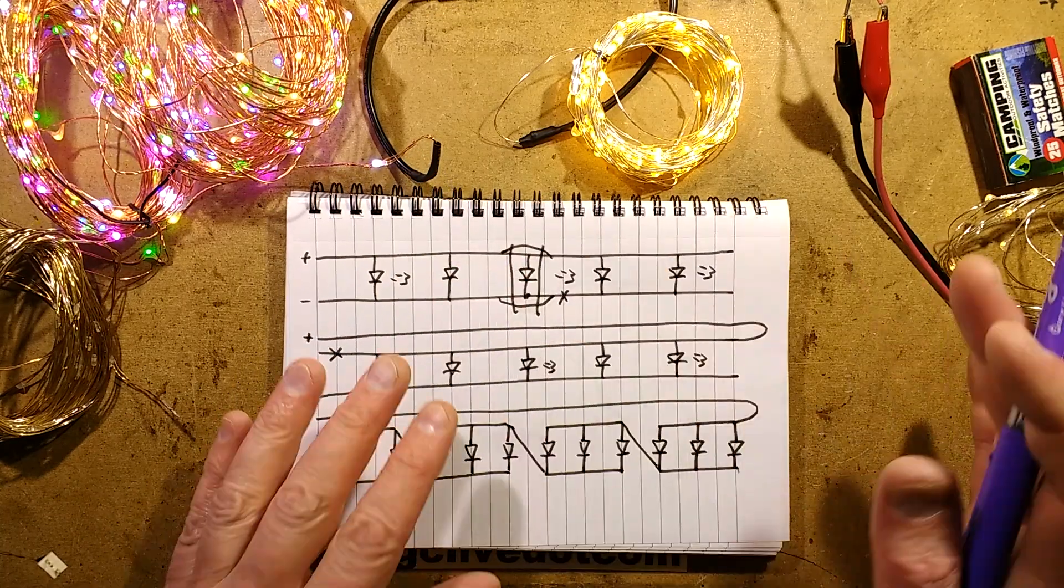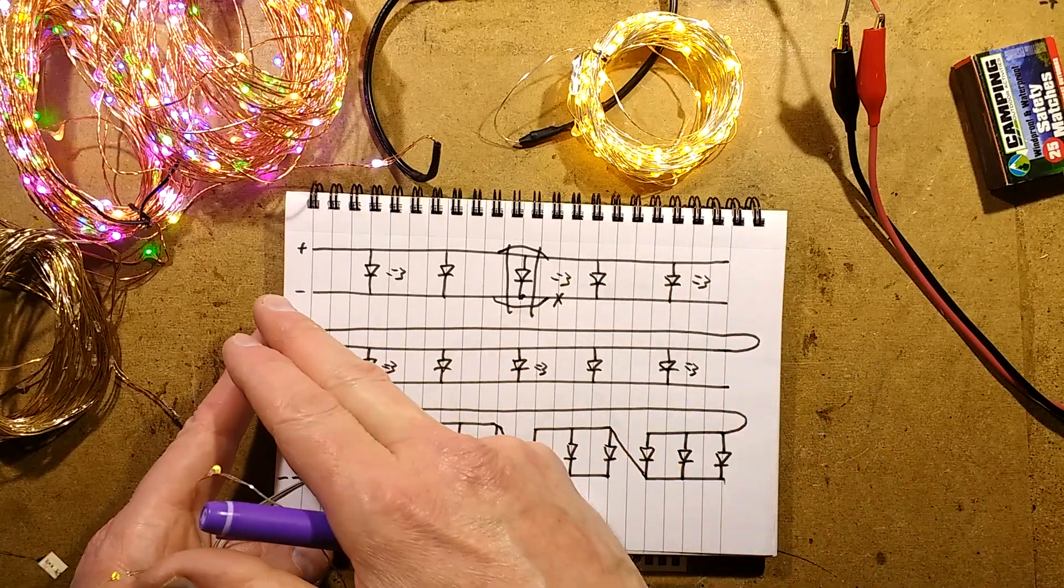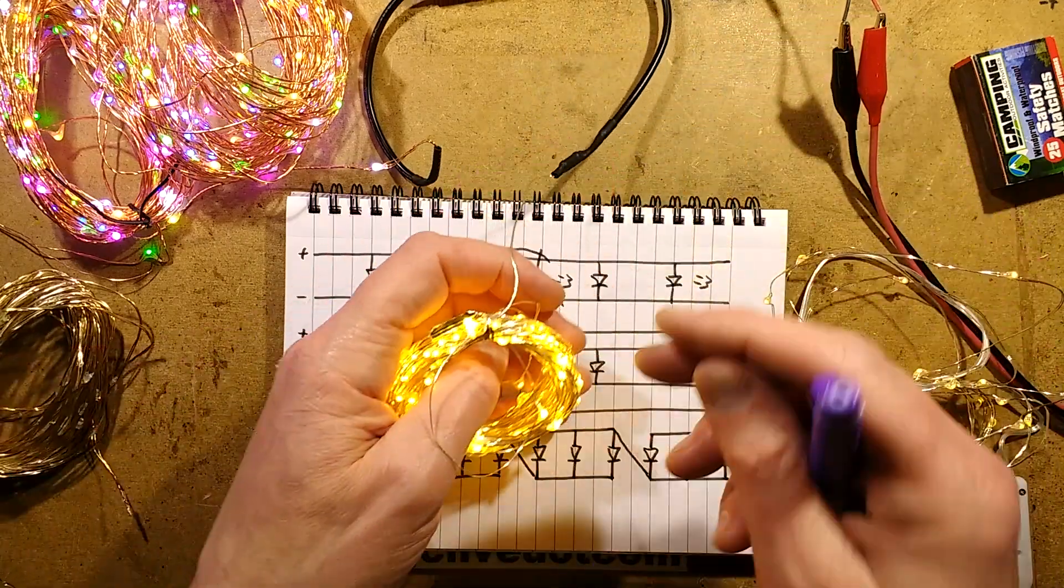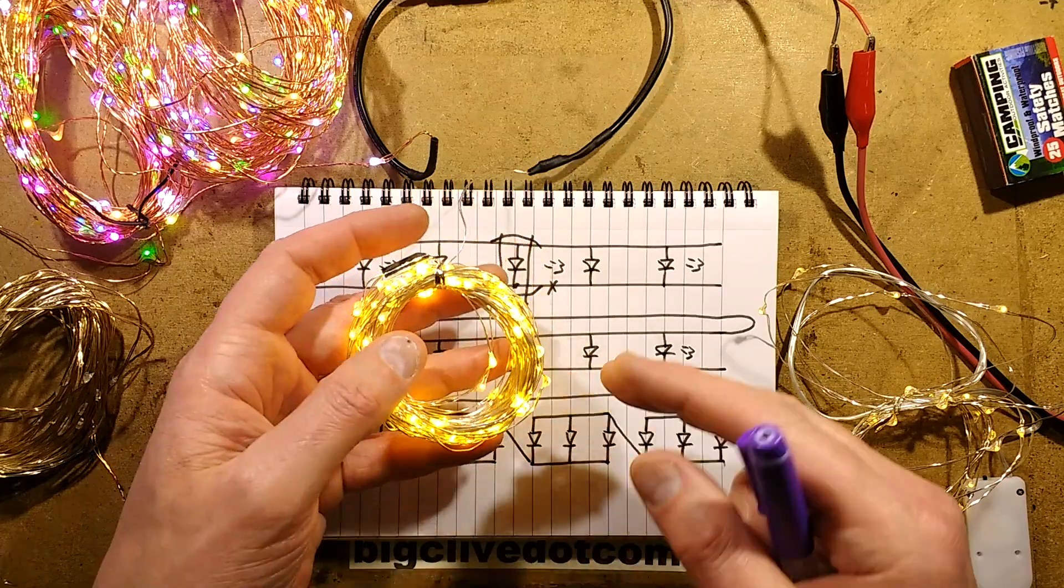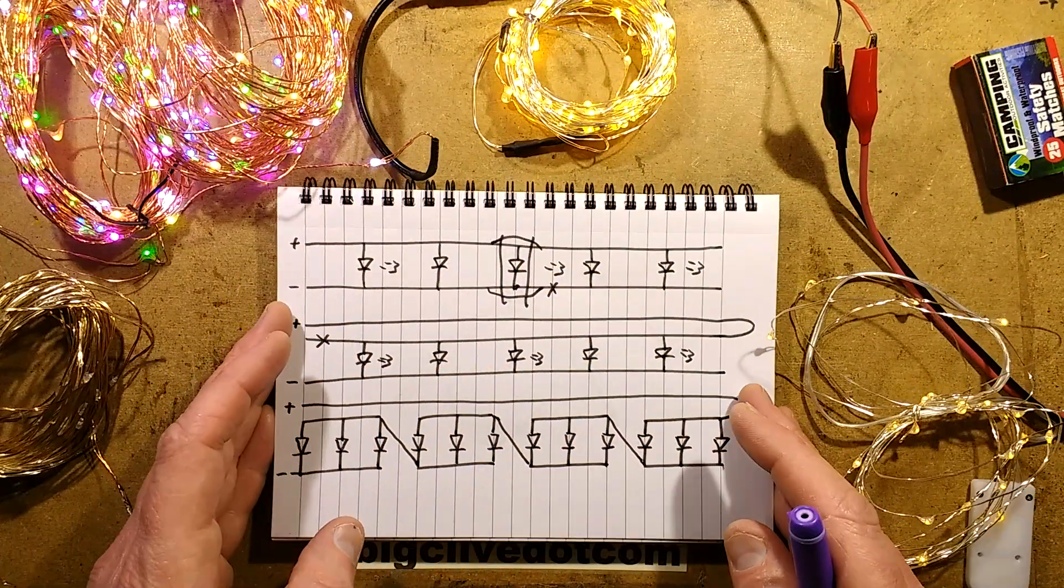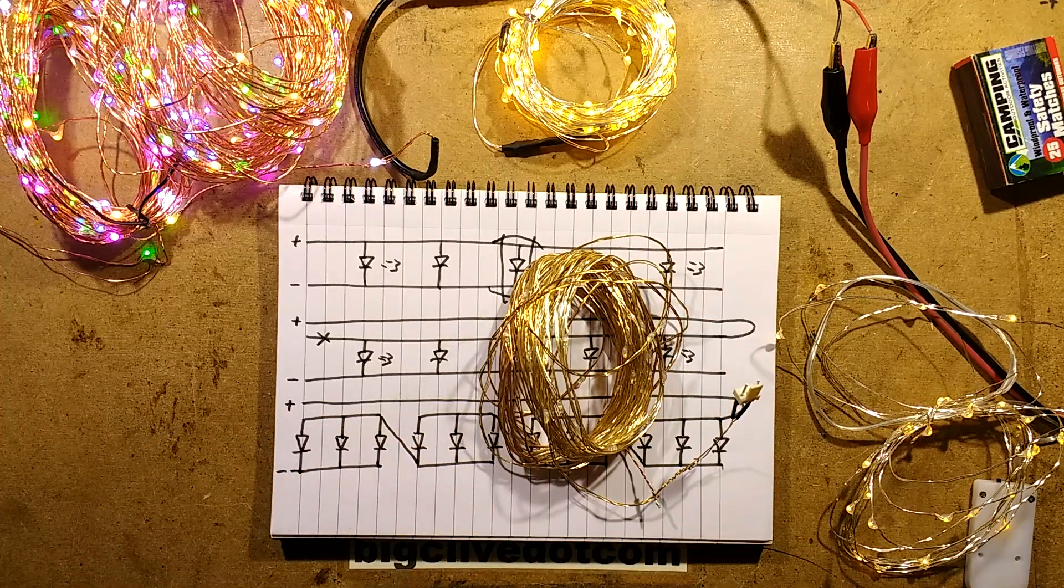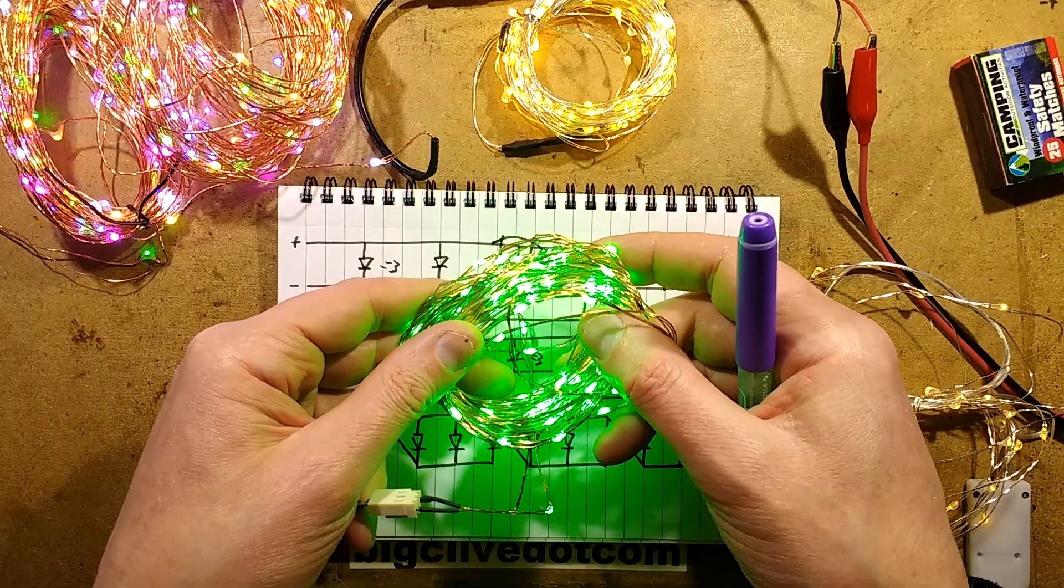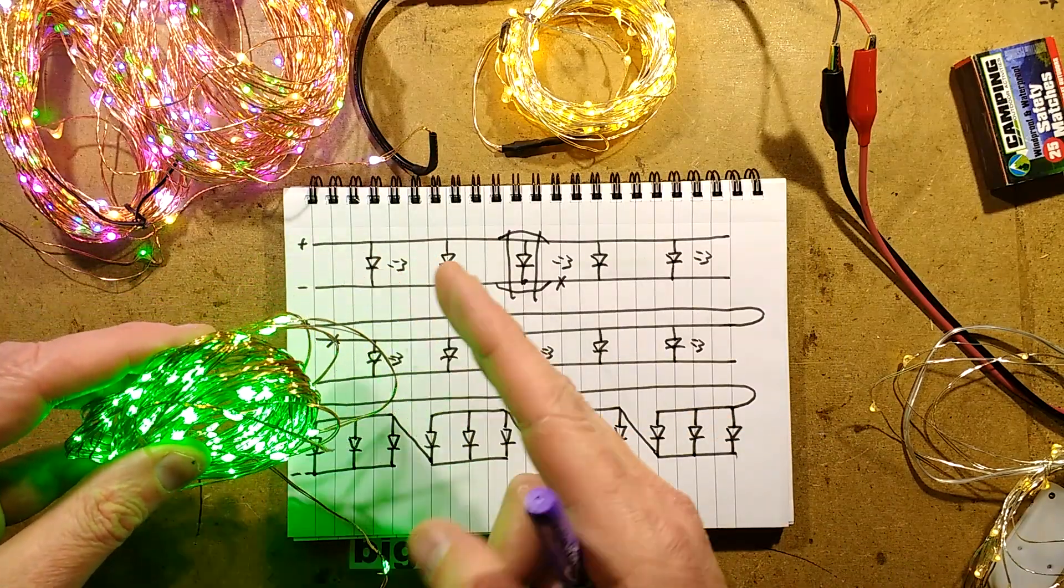The next type of technology version is the three wire system. It's low voltage again. This is a version of that. This one relies on the resistance of the wire and runs LEDs at quite high output as a result. This is using the three wire technique, and if you cut this anywhere in the string the whole lot will go out.